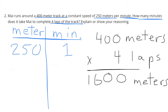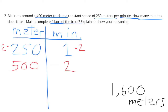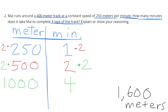I'm going to build the meter side of this table up to 1600. One minute times two is two minutes; 250 meters times two is 500. Multiply the 500 meters times two to get 1000 meters, and two minutes times two gets me to four minutes. So I'm getting closer to 1600 meters.